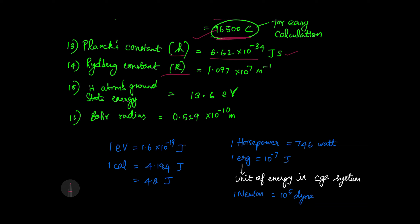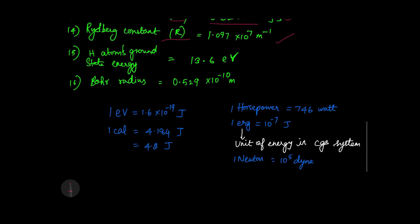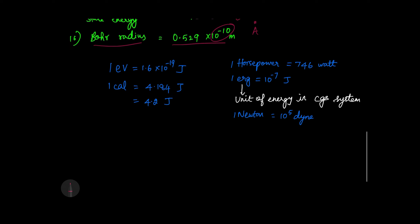Rydberg constant value is 1.097 × 10 power 7 meter inverse. For the hydrogen atom in the ground state, energy is 13.6 electron volts. Bohr radius is 0.529 × 10 power minus 10 meter, which is 0.529 angstroms.